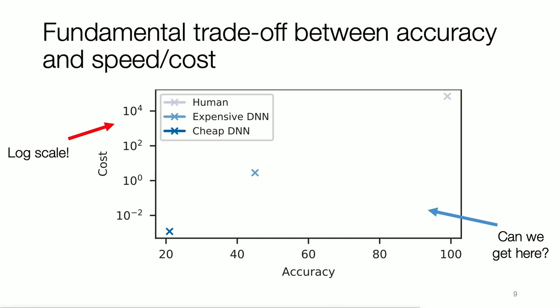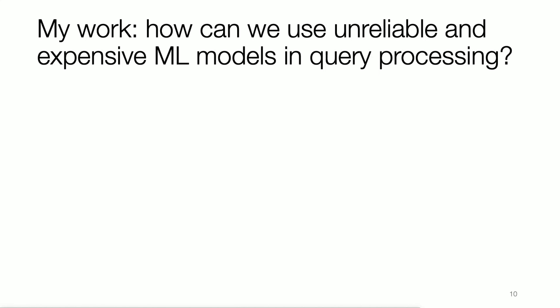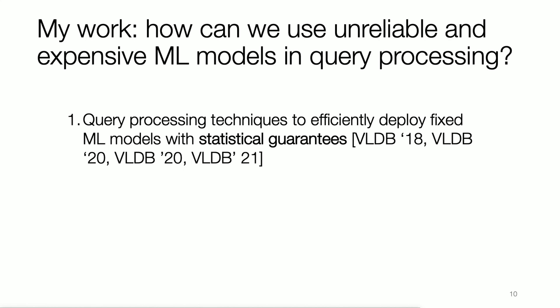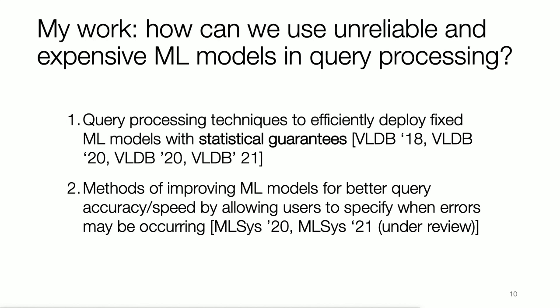In this talk, I'll focus on the question: can we get to the bottom right of the accuracy-cost plot, which is high accuracy at low cost? In my work, I ask whether we can use unreliable and expensive machine learning models in query processing. I'll talk about query processing techniques to efficiently deploy a fixed set of machine learning models with statistical guarantees on query results, published in VLDB from 2018 through 2021.